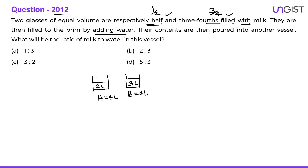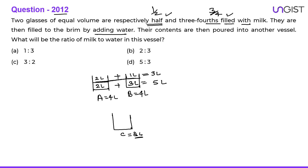So here we have added two liters of water to glass A and one liter of water to glass B. Then their contents are poured into another vessel. So let us say they are now poured into vessel C. So obviously in vessel C we will have eight liters of mixture. In vessel C we have three plus two — five liters of milk — and two plus one — three liters of water.